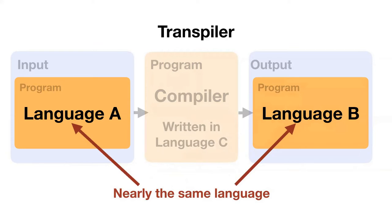Is Babel a transpiler or a true compiler? It comes down to whether you believe that ES2019 JavaScript is the same language as ES5 or ES4 JavaScript. If you think those are different languages, then it's basically a true compiler. If you think they're kind of the same, then it's a transpiler. All of this argument is very uninteresting, but I'm doing it so we define the terms, so that when you hear these words you have a solid grounding in what people are talking about.